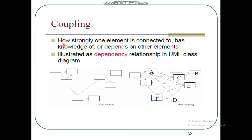The same definition applies: how strongly one element is connected to, has knowledge of, or depends on other elements. This is illustrated for each class via the dependency relationship in UML class diagrams, which we have previously discussed.